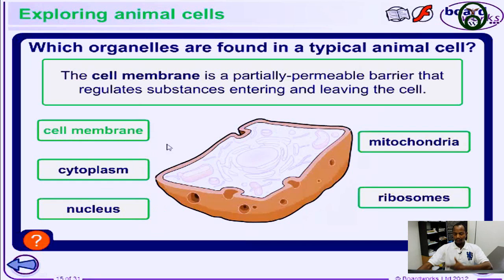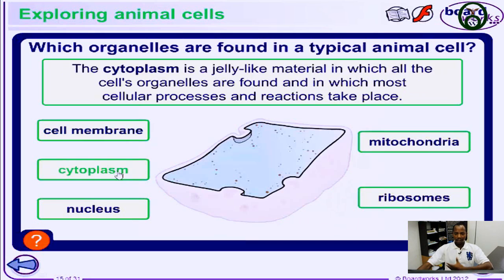The cell membrane is a partially permeable membrane barrier that regulates the substances that go inside this cell or go out of this cell. Now let's take a look at cytoplasm. The cytoplasm is a jelly-like substance or material which contains the cell's organelles, and this is where the metabolic processes and reactions take place in the cell.